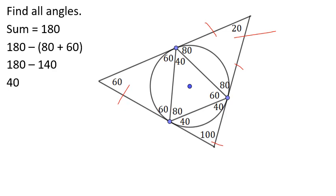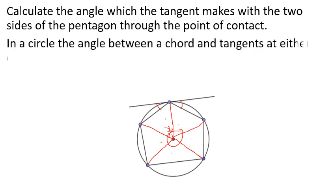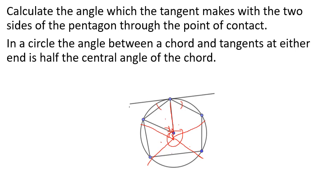The angle of the tangent makes two sides through the point of contact. The angle between the chord and the tangent at the end is half the arc — that is, half the central angle. We can divide the circle, and the circle between the chord and the tangent at the end equals half of the arc.